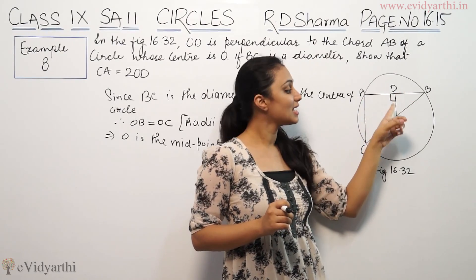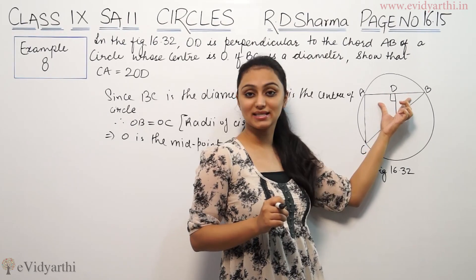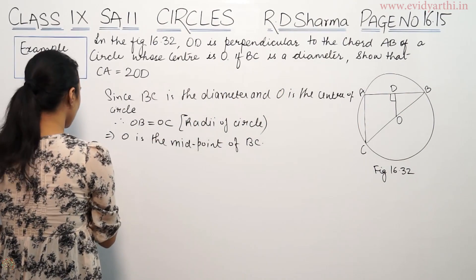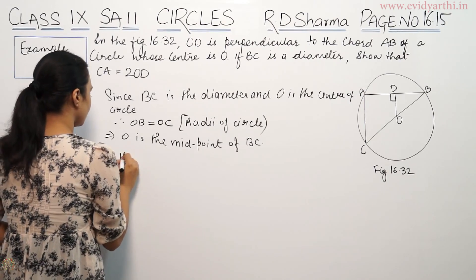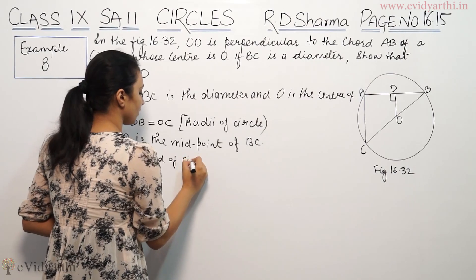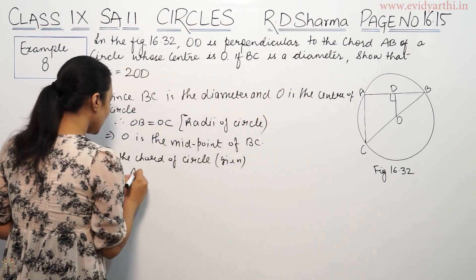AB is the chord which is given. So AB is the chord of circle. This is given.